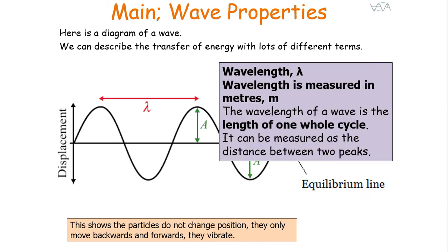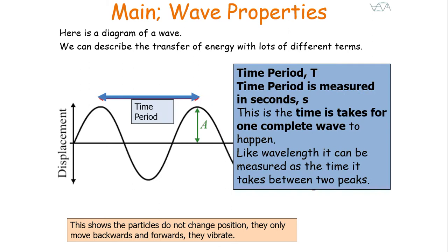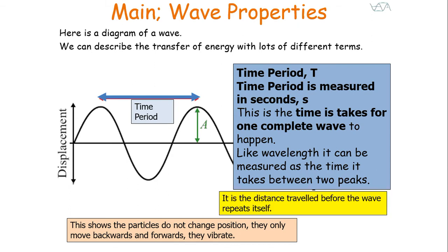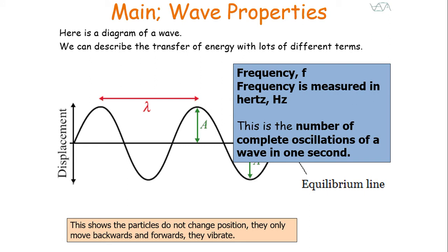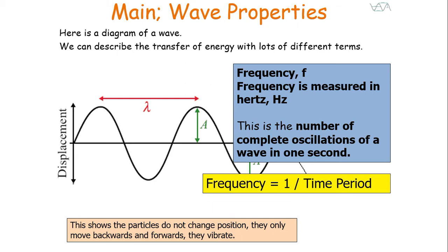Wavelength is a measure of the length of one whole cycle — it could be from the peak of a wave to the next peak, from trough to trough, or from a centre point on one wave to the same centre point on the next wave. It's measured in metres and is the distance the wave will travel before it repeats itself. The time period, measured in seconds, is the time taken for one complete wave — it can be measured between two peaks, two troughs, or two same points on consecutive waves.